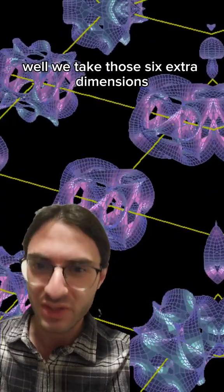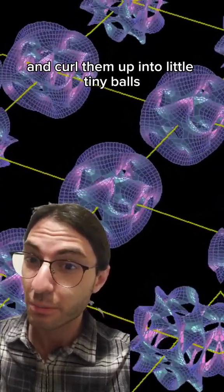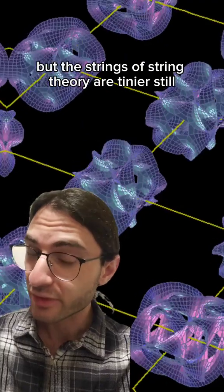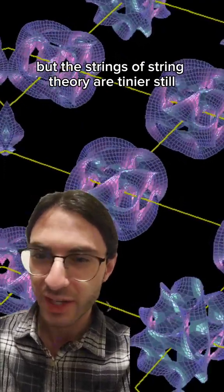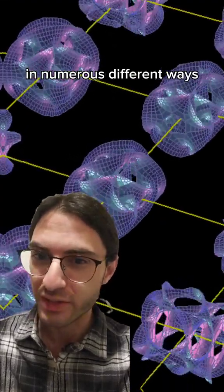So how do we get there? Well, we take those six extra dimensions and curl them up into little tiny balls. They're so tiny that we wouldn't notice them at all, but the strings of string theory are tinier still, and so they could wrap around these complex shapes in numerous different ways.